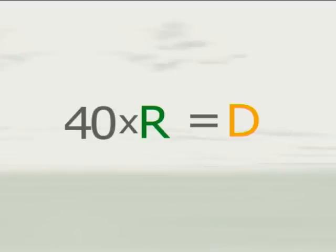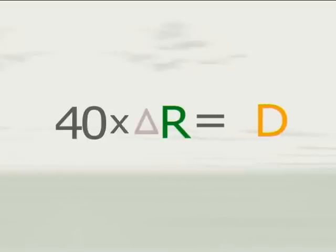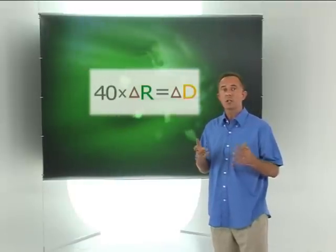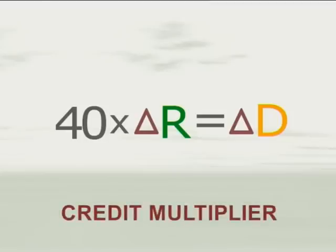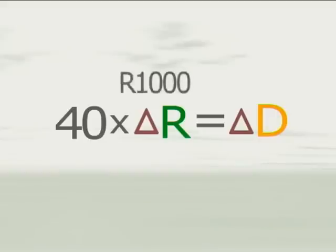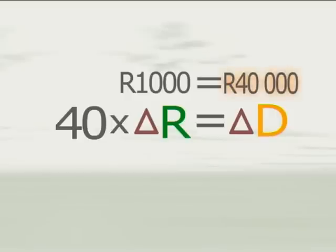Total deposits, reflected in banks around the country, can be up to 40 times larger than the actual cash reserves held by the Reserve Bank. So a change in reserves can lead to a change in total deposits that is 40 times larger than the initial change. This then is our credit multiplier. If the total amount of cash reserves in the economy increases by 1,000 RAND, banks will be able to create additional deposits equal to 40 times this — up to 40,000 RAND.